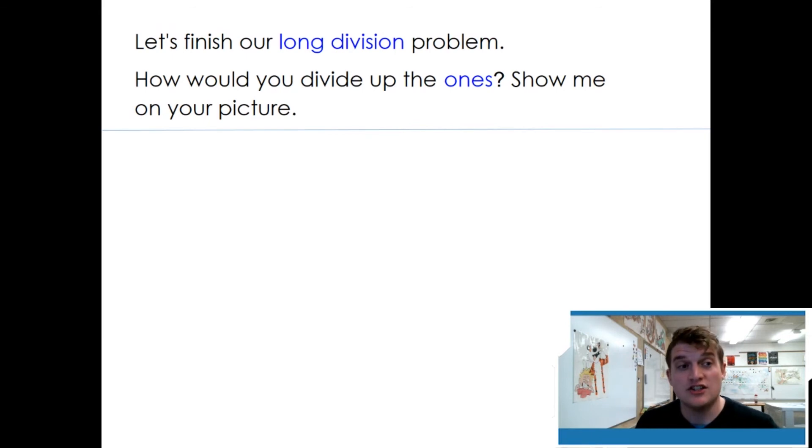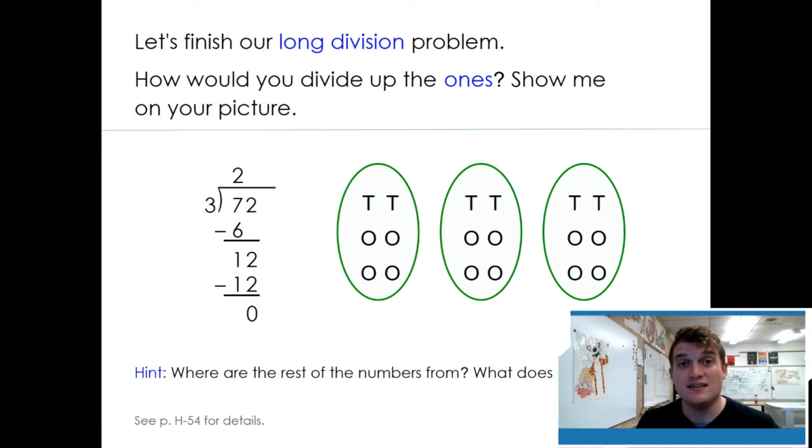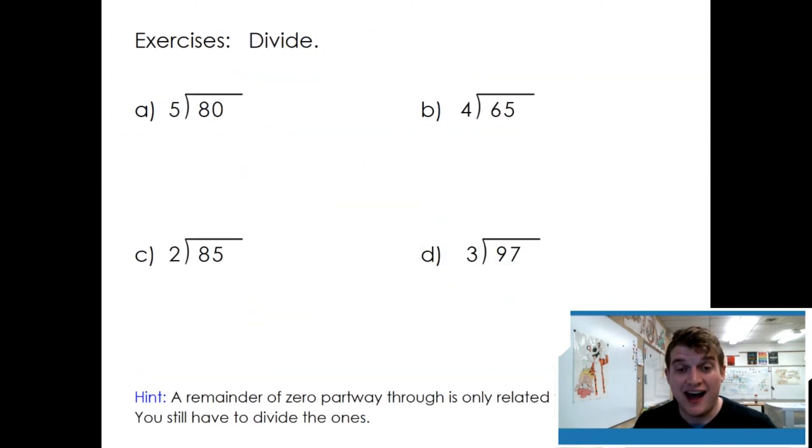Let's finish our long division problem. How would you divide up the ones? In this case, for our original problem, we had twelve ones that we had to share in each group. When we share twelve ones, we then write it in our standard algorithm. We were able to share twelve, so we wrote twelve, and we get a zero. The zero tells us there's no remainder. If we got a number, there would be a remainder.